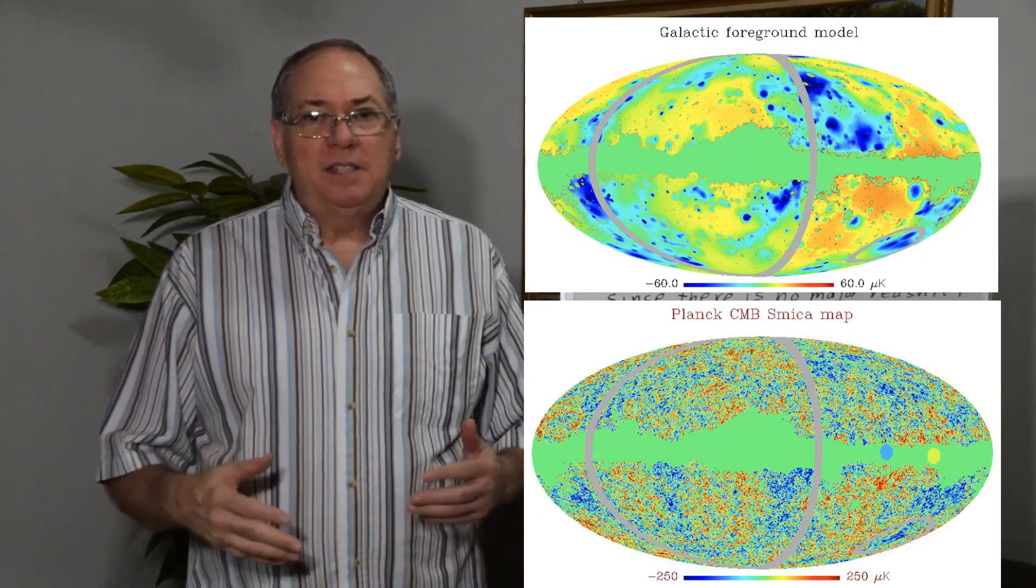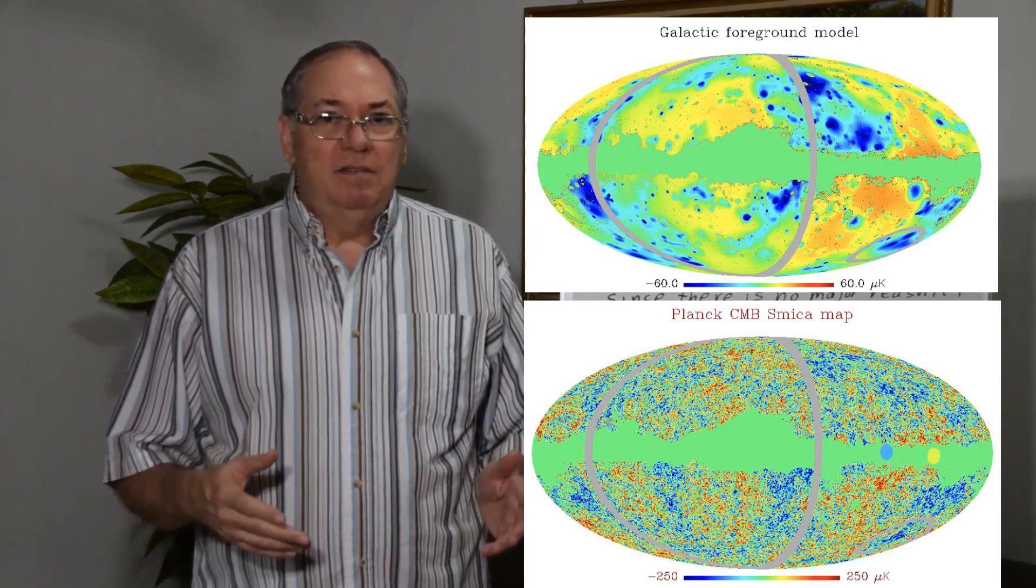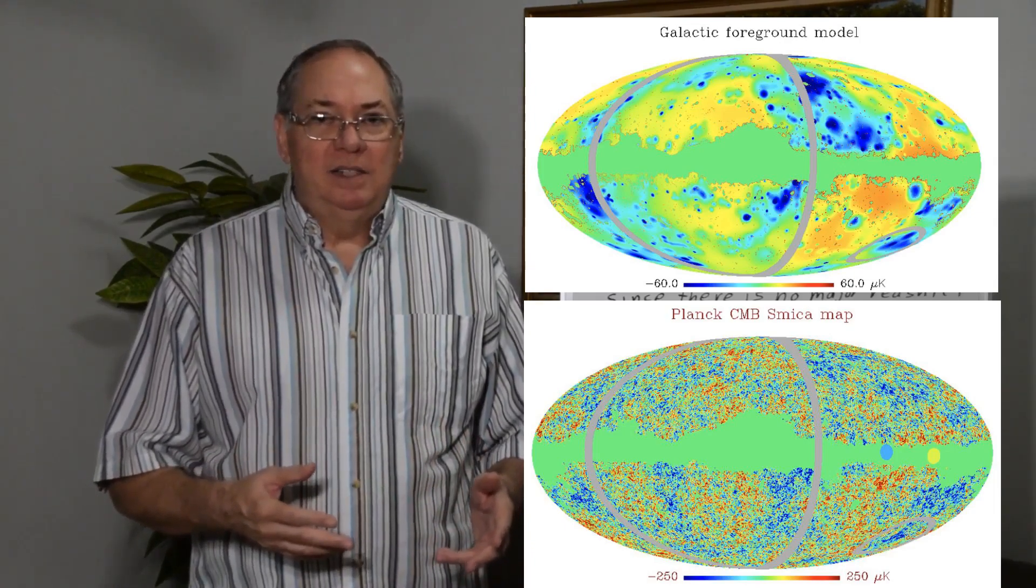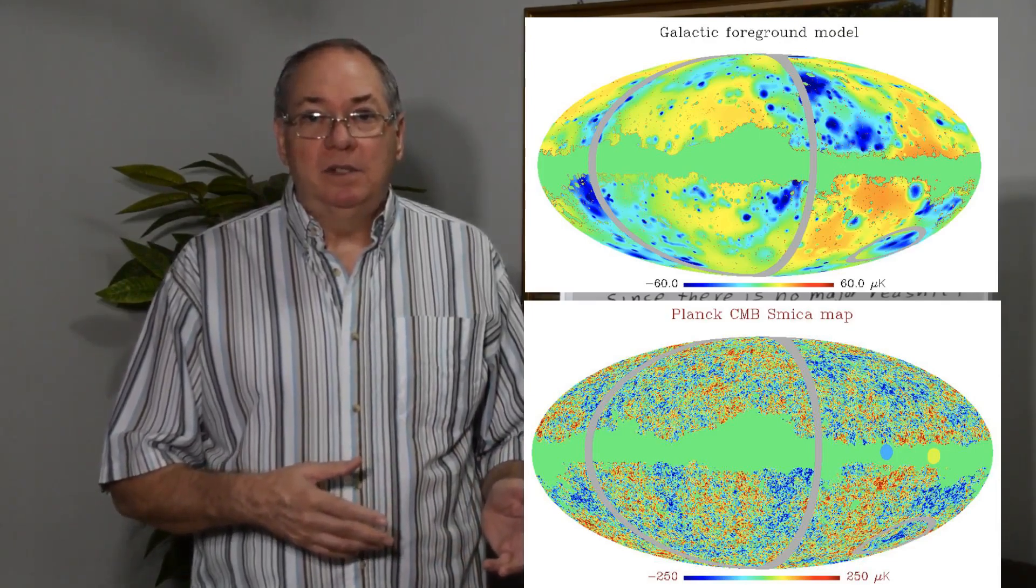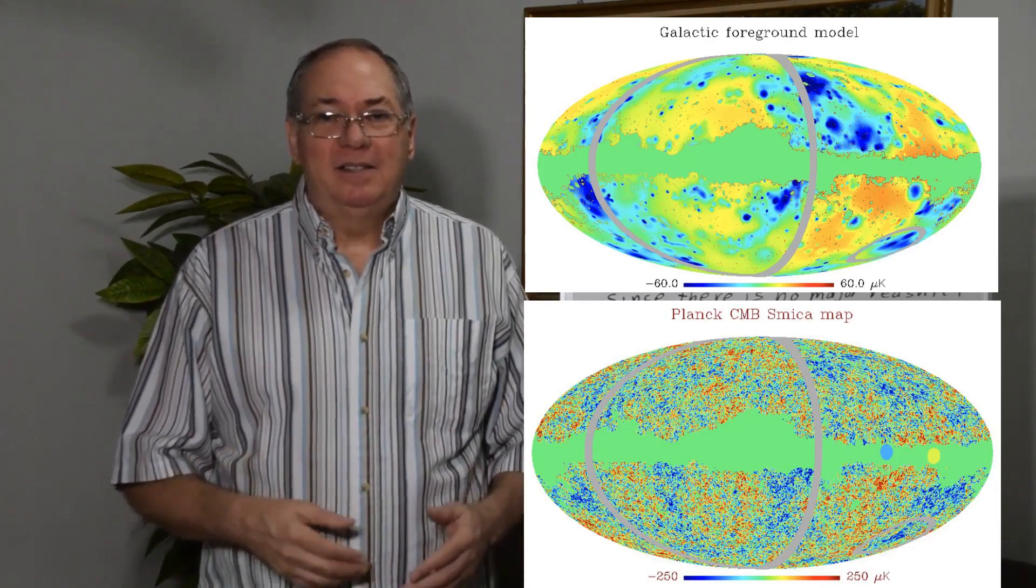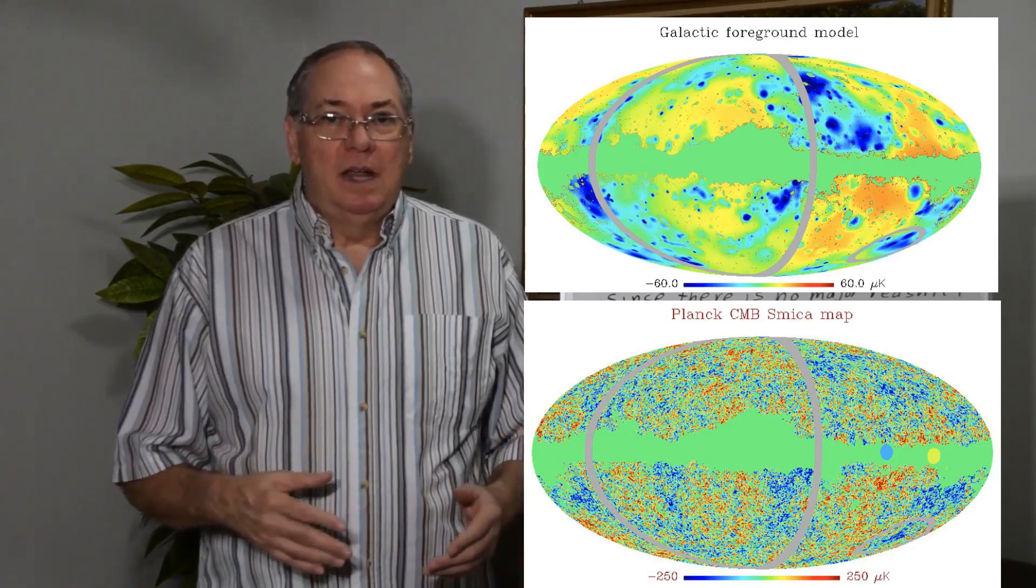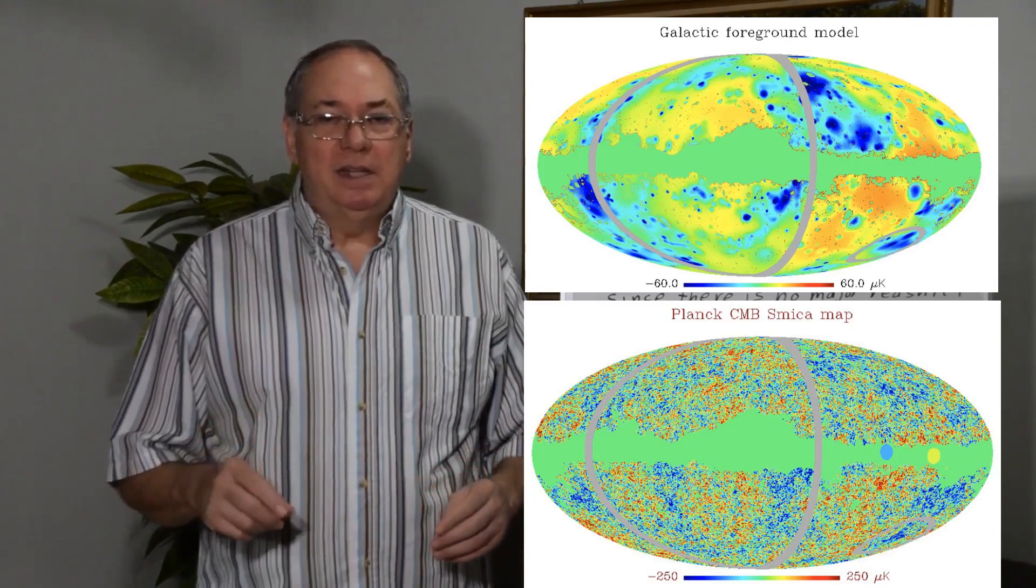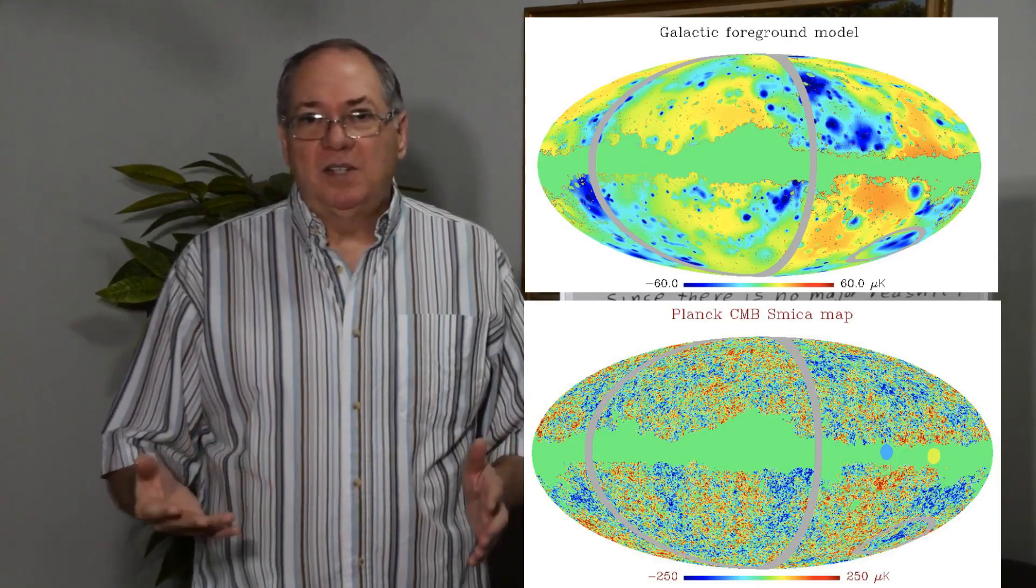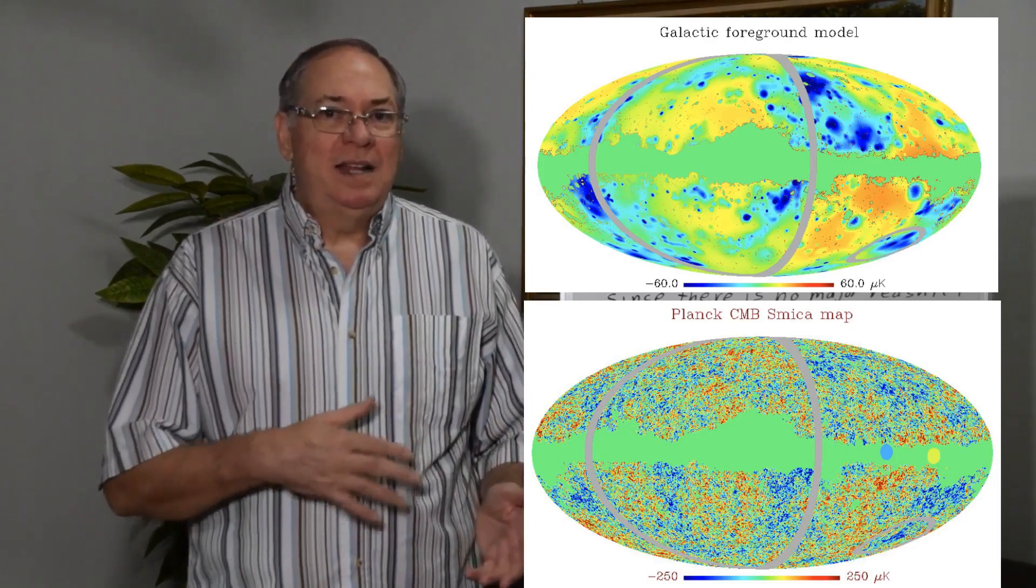And then they did an approximation saying well what if we have a little bit of redshift. Now there is some redshift but it's in the microkelvin range compared to the 2.7 kelvin temperature. So 100,000 times smaller, 10,000 to 100,000 times less than the temperature. So it's a tiny amount of redshift. And if they do an approximation of these large galaxies causing redshift, they end up getting a map that looks a lot like the Planck map.